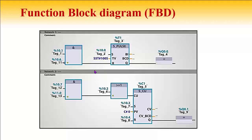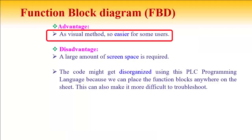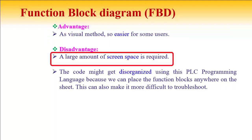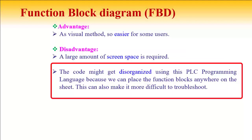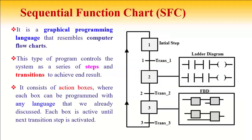Here is another example of Function Block Diagram: an AND block, a pulse timer, and an output block (defined by the equals sign). Another example shows an AND block with two inputs, a comparator block, a counter block, and an output block. The advantage of Function Block Diagram: it is a visual method and one of the easiest methods for PLC programming. Disadvantages: it requires large screen space, the code can become disorganized since blocks can be placed anywhere, and troubleshooting can be more difficult.